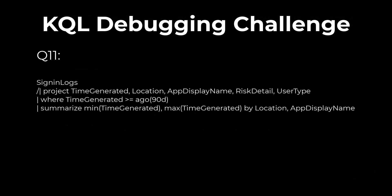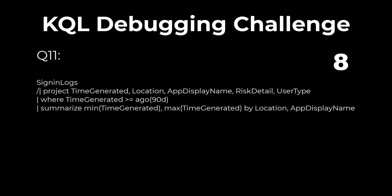Problem 11. Find the bug in this query. When we comment out a line, we need to use two slashes. This query only has one, which will produce an error.